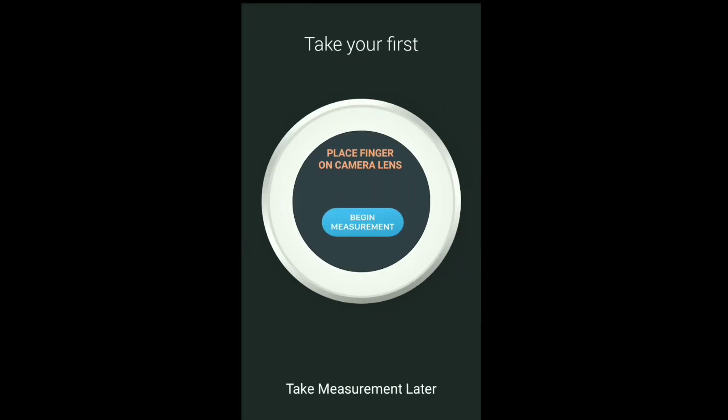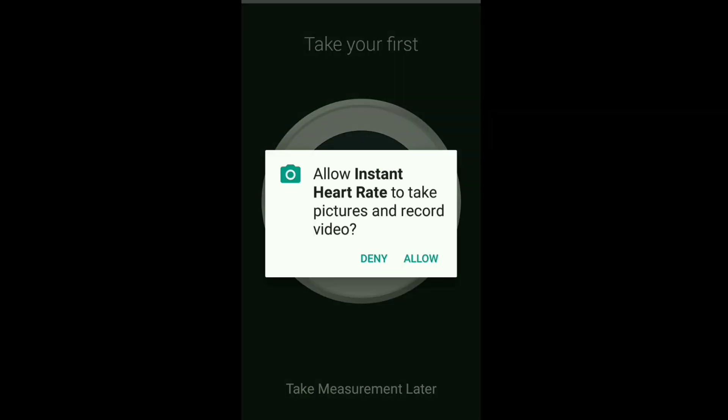Then click the camera. Then click the begin measurement option. If you are doing that, you will have a permission prompt. Then click to allow the permission.